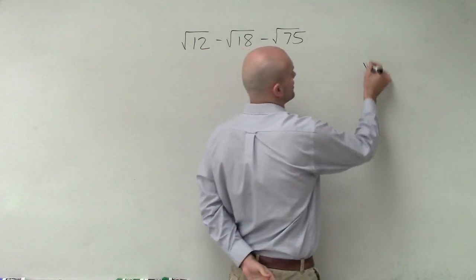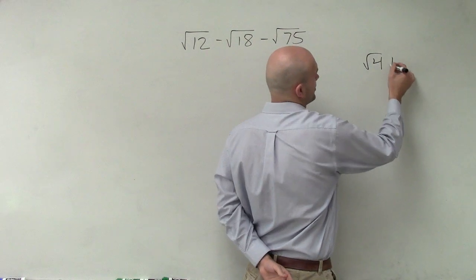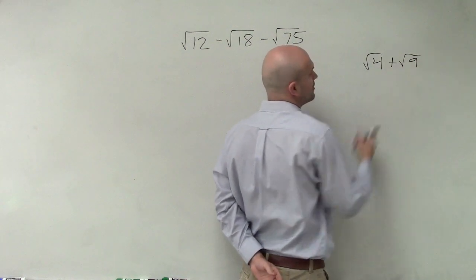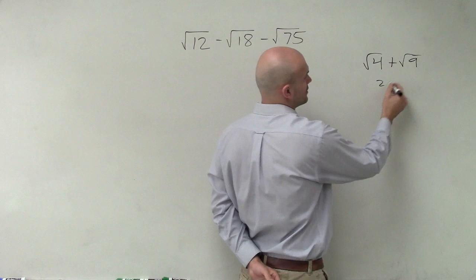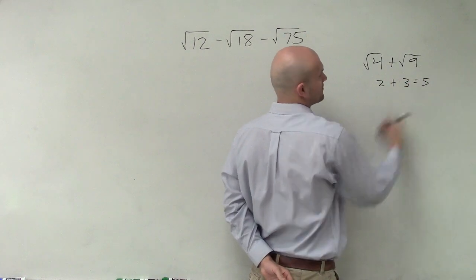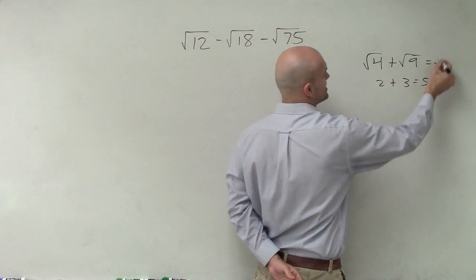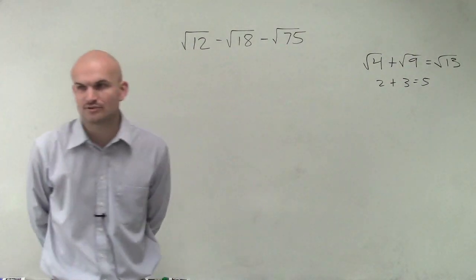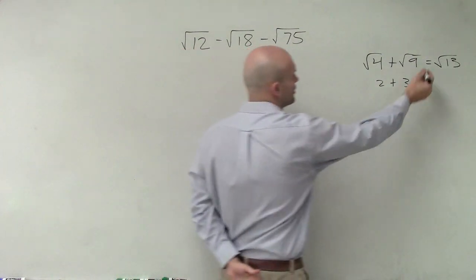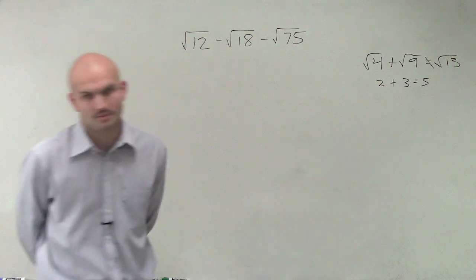And I'll just prove my point real quick. The square root of 4 plus the square root of 9. Well, we know this answer is 5, right? 2 plus 3 equals 5. But if you were to add these up and you say, oh well, that equals the square root of 13. Is the square root of 13 equal to 5? No. So we know that you cannot add them up.